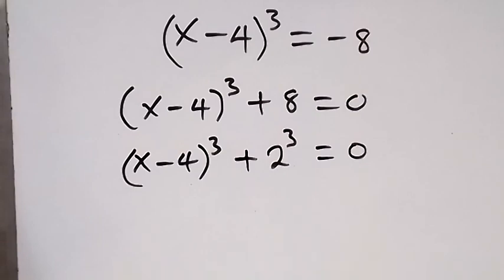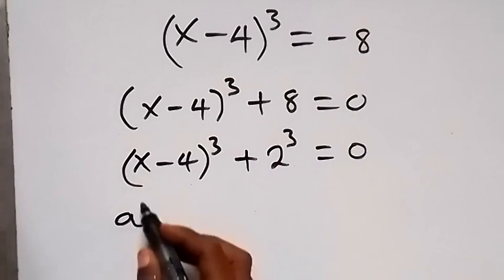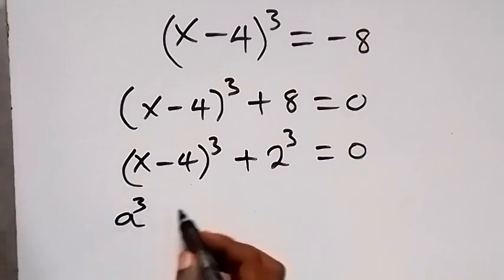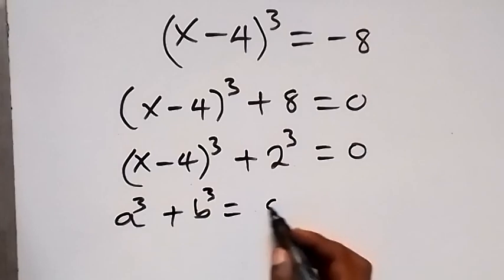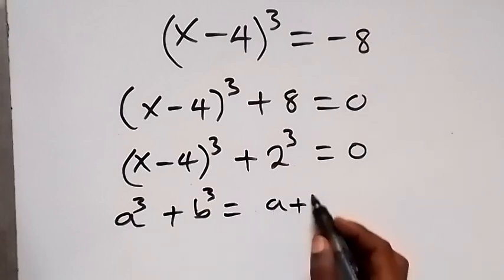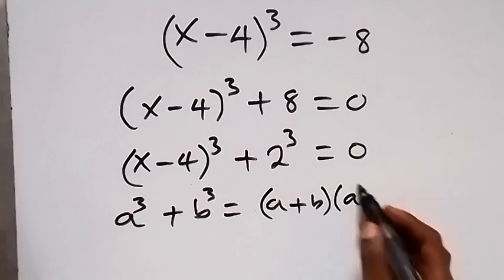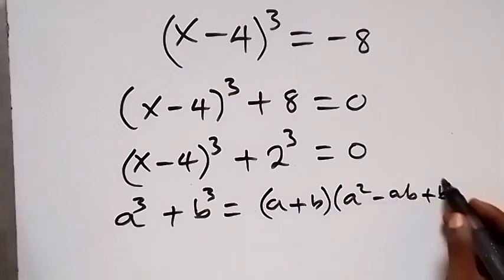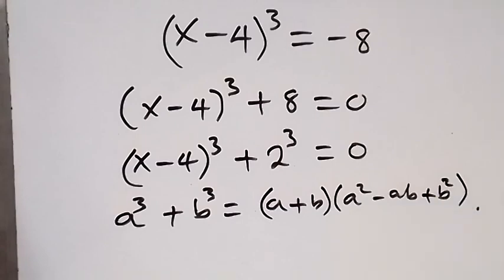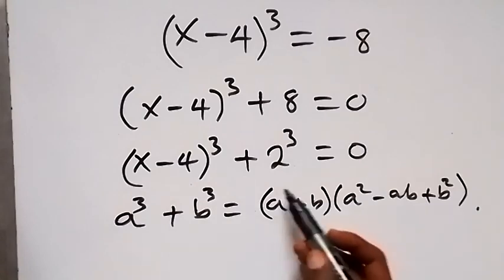From here we have something of the form sum of two cubes. That is, when we have a raised to power 3 plus b raised to power 3, this can be expressed as a plus b, multiplied by a squared minus ab plus b squared.